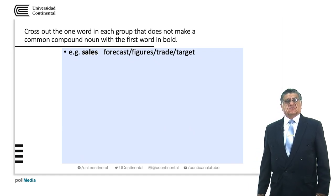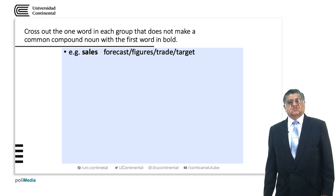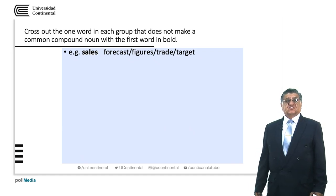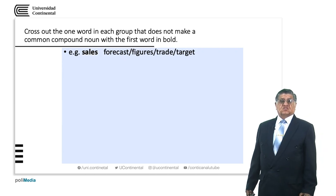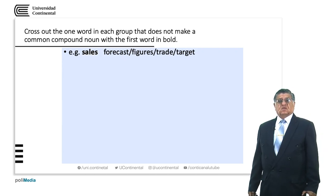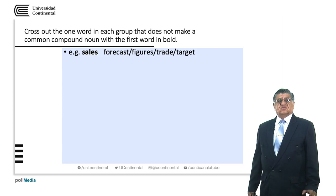We are going to make a common compound now with the first word in bold. For example: sales — 'sales forecast', 'sales figures', 'sales trade', 'sales target'.